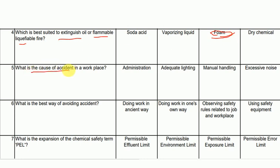What is the cause of accidents in the workplace? And what is the best way of avoiding accidents? The best way of avoiding accidents in the workplace is by observing safety rules related to the job and workplace.